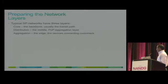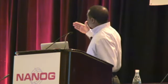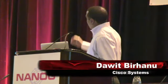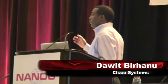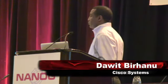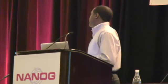Typically, if you have multiple layers — core, distribution, and aggregation — the core has to have the full internet table. The aggregation layer doesn't need to participate in the full IBGP table. The distribution layer, depending on the scenario, may or may not participate in the full internet table exchange.